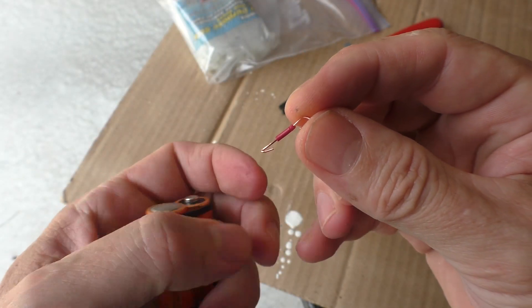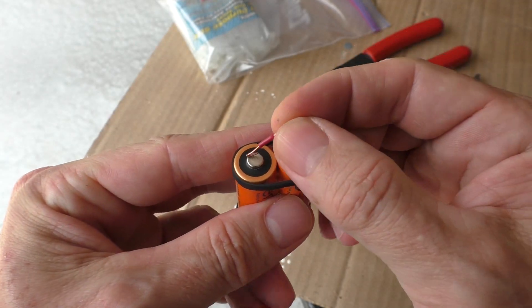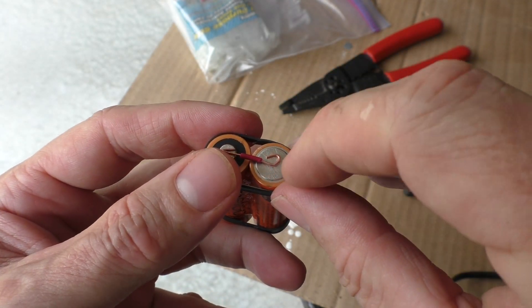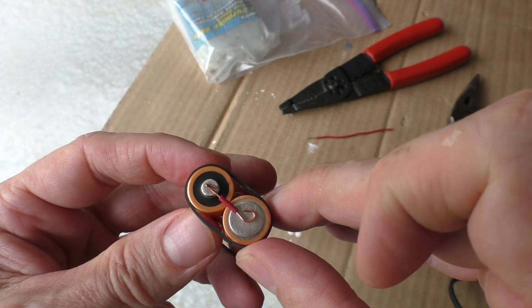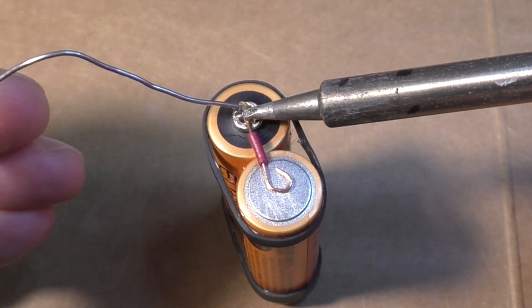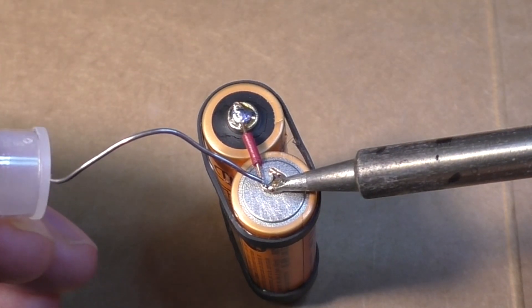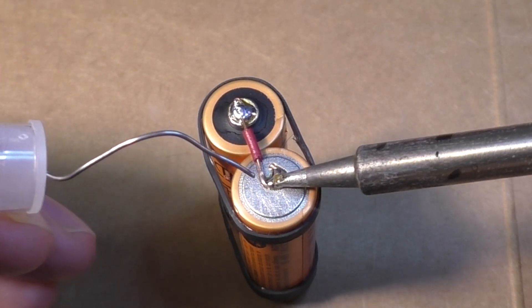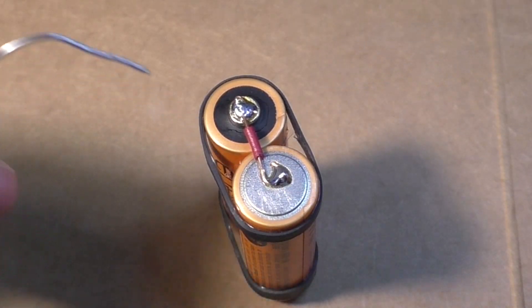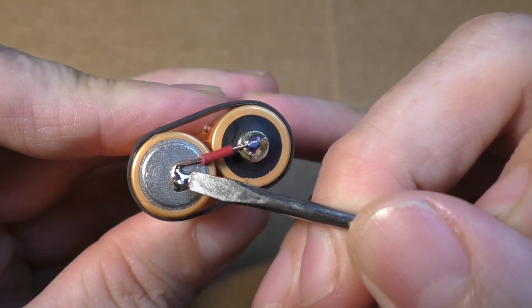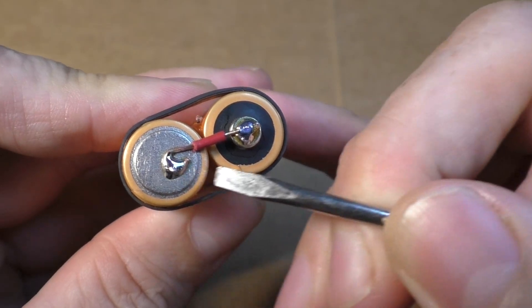I cut and strip this little piece of wire. I'm going to solder it on top of the battery. Now make sure the solder is really tough and strong.